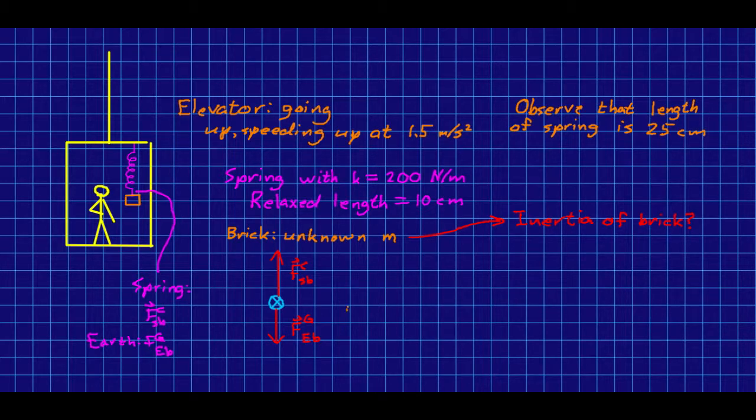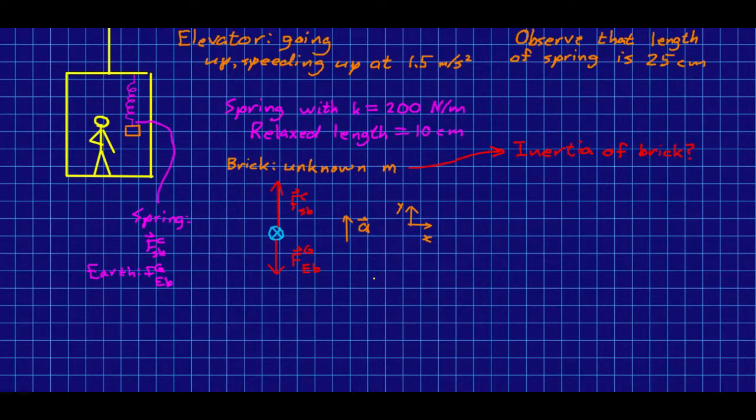And the brick is accelerating up. And remember, from the woman's perspective, the brick is just sitting stationary. But that's a non-inertial reference frame, and so we don't want to work from that perspective. So for an observer outside the elevator, that brick would be accelerating up with the elevator. So now let us define our axes. I'm going to put my y-axis up. All our forces are aligned with the y-axis.